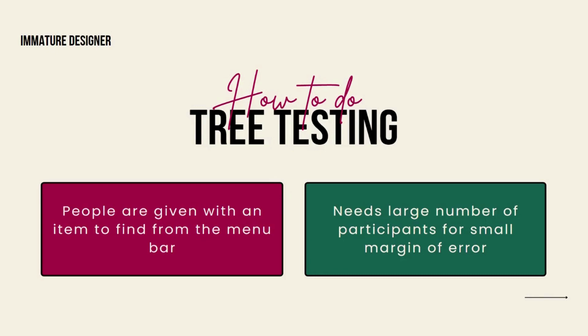That's how you give items to your users and ask them to find which menu option each item should lie under. In this tree testing process, you need a large number of participants so that you can have a small margin of error. Designing a menu bar for your website or application is one of the most important parts, because generally people start searching and finding things directly from the menu bar itself.